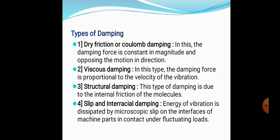The second type is viscous damping, where the viscosity of a lubricant creates resistance to motion or velocity. The third type is structural damping, caused solely by internal friction between molecules — a micro-level phenomenon. The fourth type is slip or interfacial damping, where energy of vibration is dissipated by microscopic slip on interfaces under fluctuating loads, causing energy losses that resist the motion.